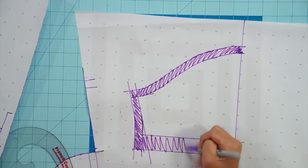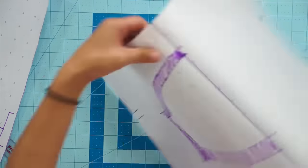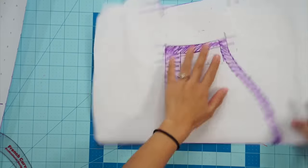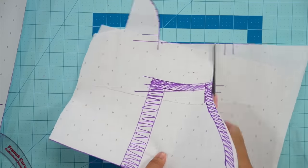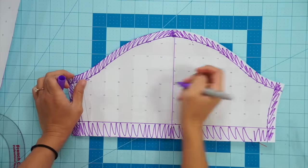Since both sides of the t-shirt sleeve is the same I fold my paper in half and cut both sides out together. But for other sleeves you will have to trace the front and back separately which I will show you in a little bit.